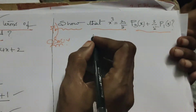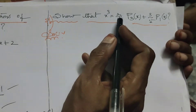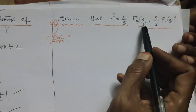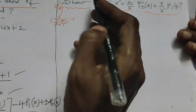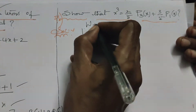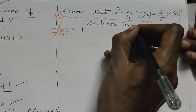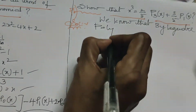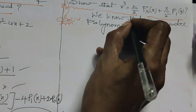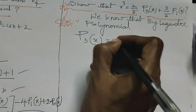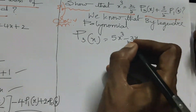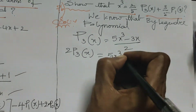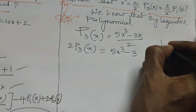Now let us solve the second problem: show that x³ = (2/5)·P3(x) + (3/5)·P1(x). We use the third-degree Legendre polynomial. We know that P3(x) = (5x³ - 3x) / 2. Multiplying both sides by 2: 2·P3(x) = 5x³ - 3x.